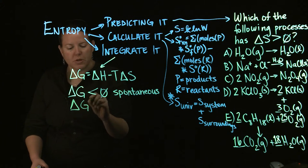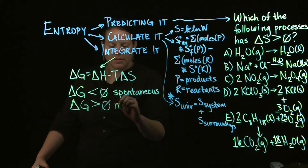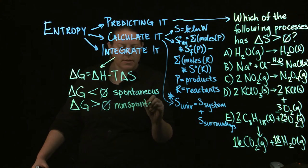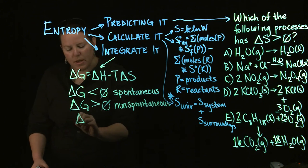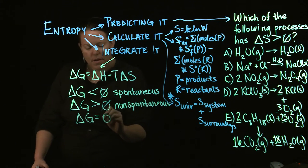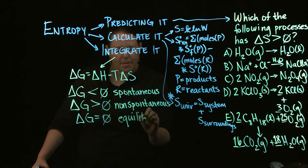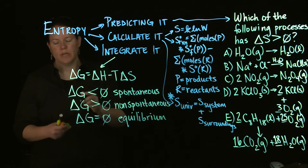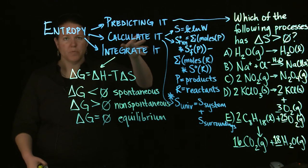There's delta G less than zero is spontaneous. Delta G greater than zero is non-spontaneous. And delta G equal to zero is at equilibrium. That system is at equilibrium. So we'll talk about G a lot more, but at the moment what we're kind of thinking about is we're thinking about entropy.